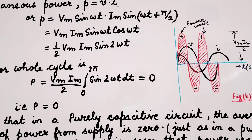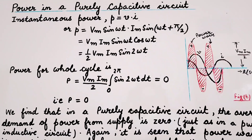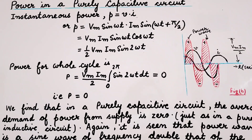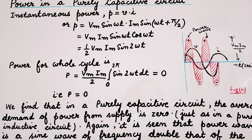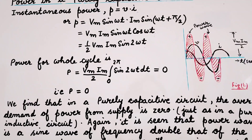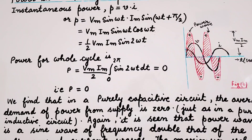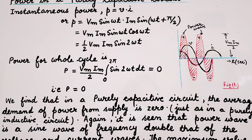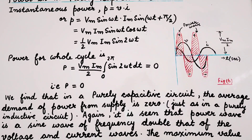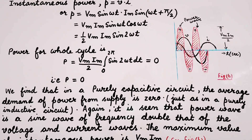It is clear from these two graphs that the average demand of power from the supply is 0 in case of a purely inductive circuit as well as in case of a purely capacitive circuit.